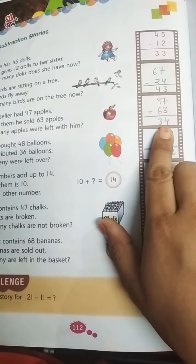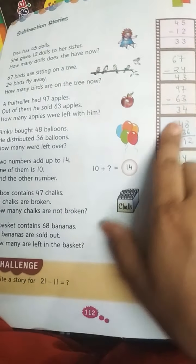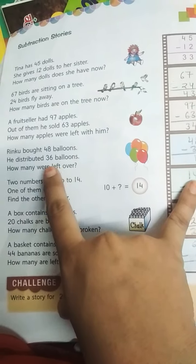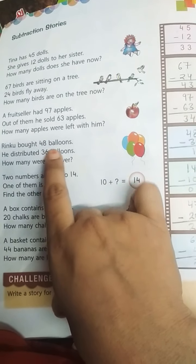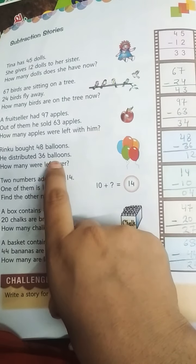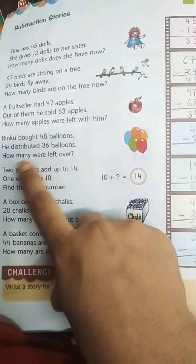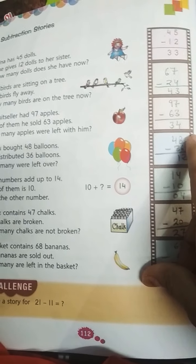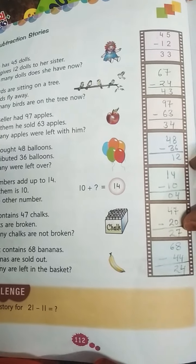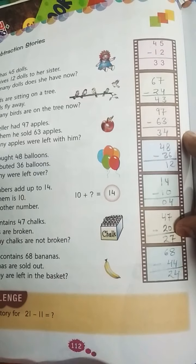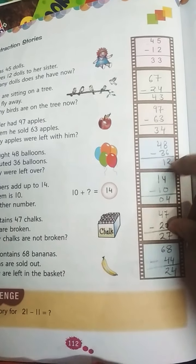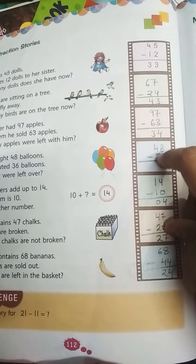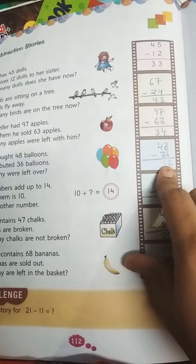Like other exercises we have done already. Zinku bought 48 balloons, he distributed 36 balloons. How many were left over? So 48 minus 36. 8 minus 6, count after 6, 7, 8, so there are 2. 4 minus 3 is very easy, is 1. Got it?